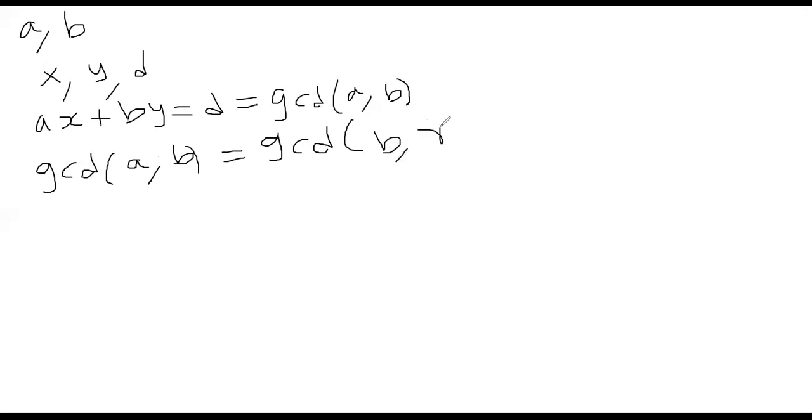What is R? R is nothing but A mod B, the remainder when A is divided by B. This is something true from Euclidean algorithm. We have seen this.